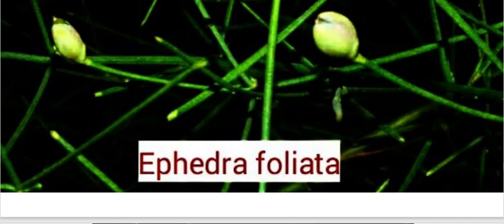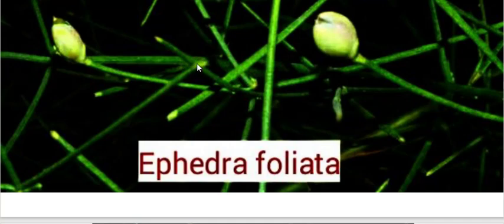Now let's see some species of Ephedra. This is Ephedra foliata. These are the shoots and stems, and these are the cone-like seeded parts in which the seeds are produced. These are the scale-like leaves which are present on the nodal regions.